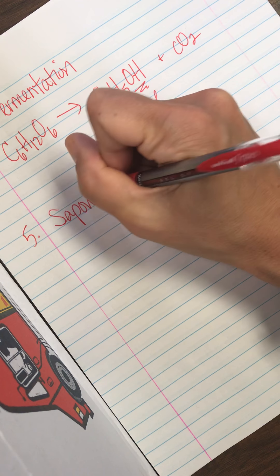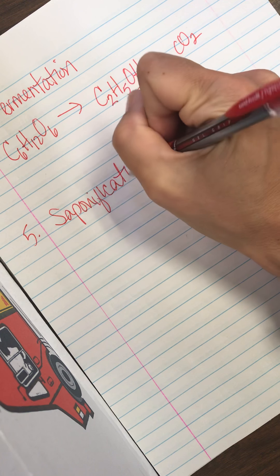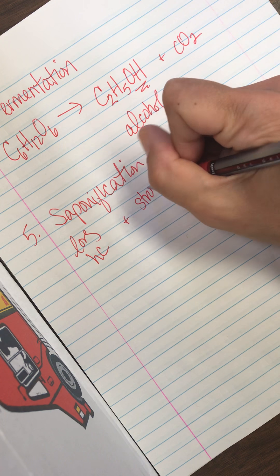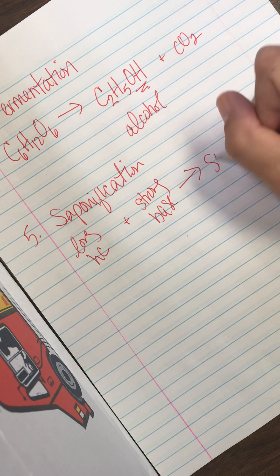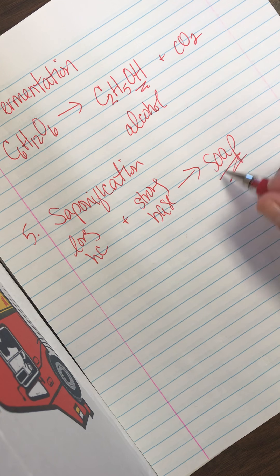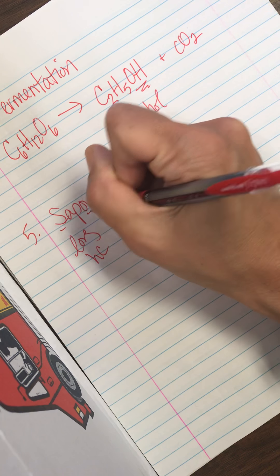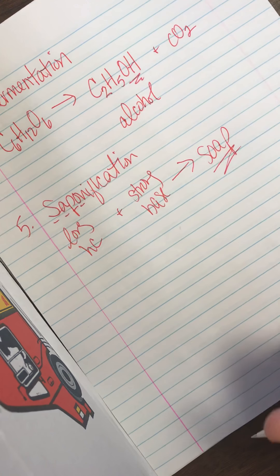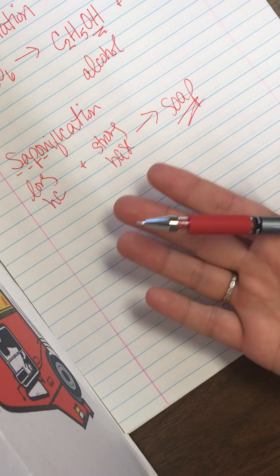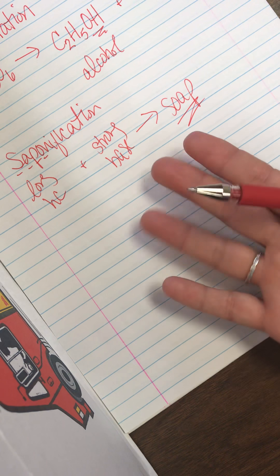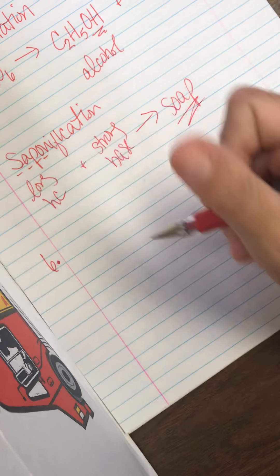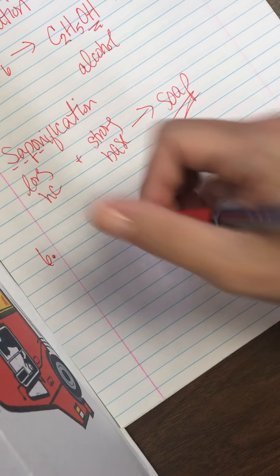All right. The next one's called saponification. And that's if you take a long hydrocarbon and you add a strong base and you make soap. So they usually don't draw out the chemical formulas. They usually write, hey, saponification makes soap. S-O-A-P. If you rearrange the first letters, that also reminds you that this is the reaction that makes soap. And why is that important? Because there are so many different soaps that we use every single day. So this industry is actually a very important industry. Every kind of cleaning product and health product.